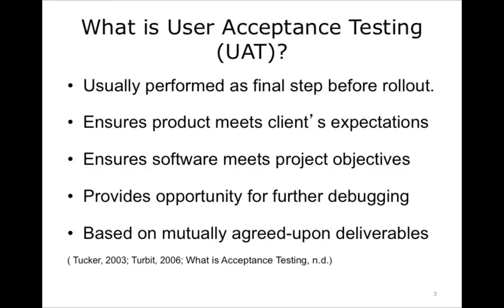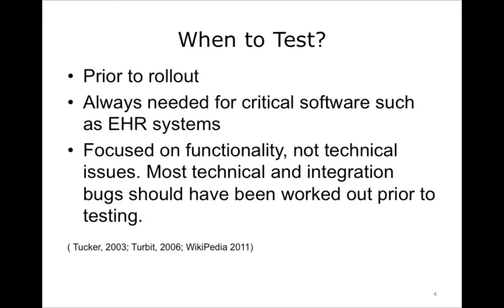Early on in the project plan, a list of baseline requirements should have been generated and mutually agreed upon by your organization and the vendor as must-haves for your software implementation to be considered successful. Your testing strategy should be based, at least in part, on validation of these requirements. UAT is usually the final step before the general rollout process begins, and the software product should be fully completed. Because of the critical nature of health record systems, UAT should always be completed before initial rollout or any upgrade to the system.